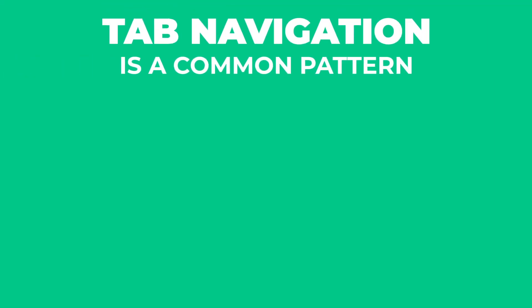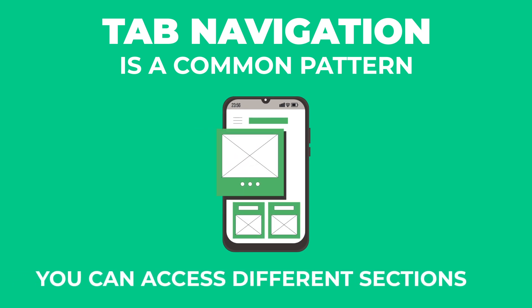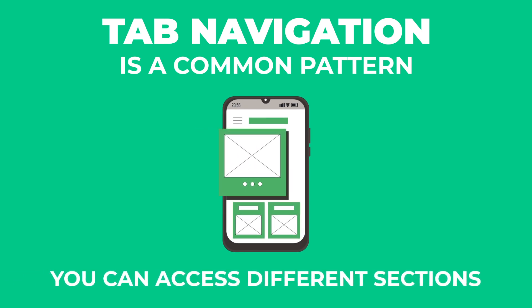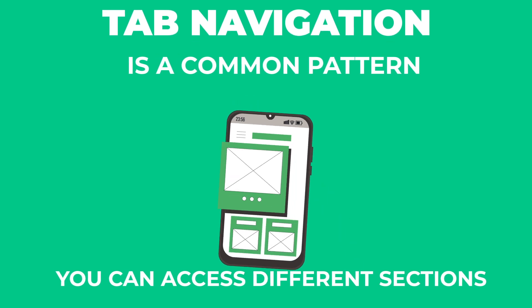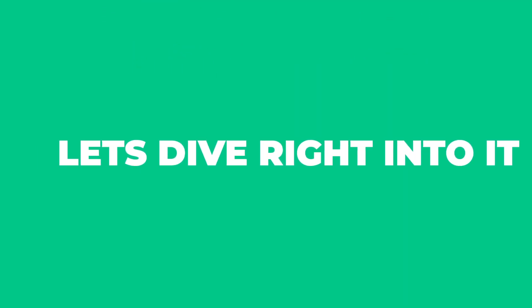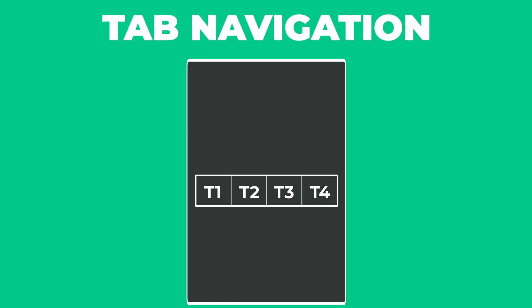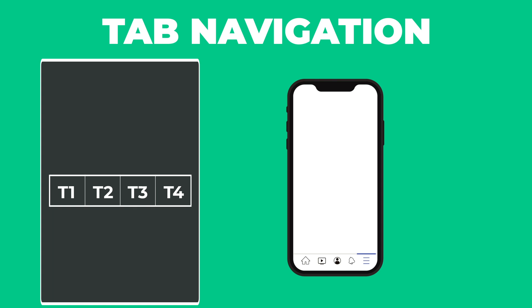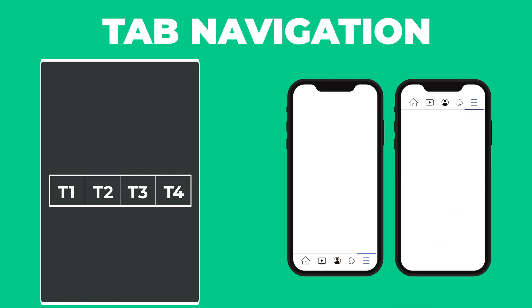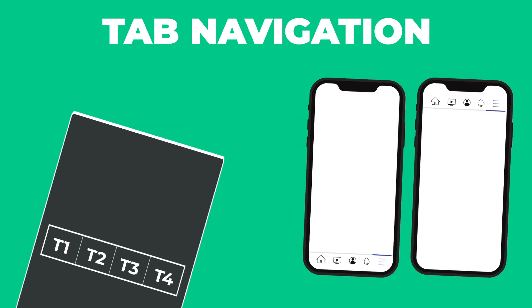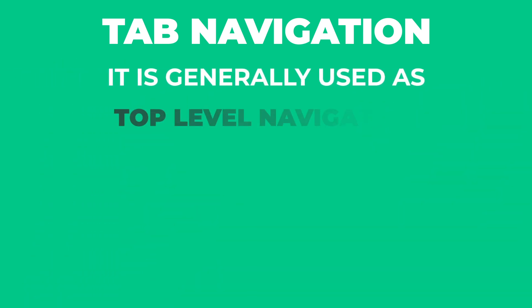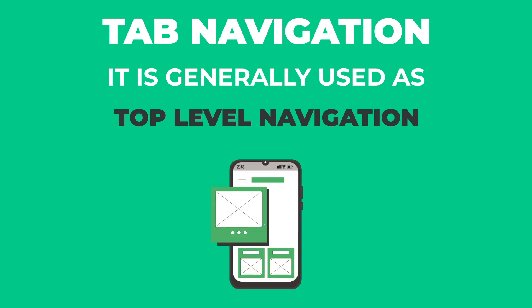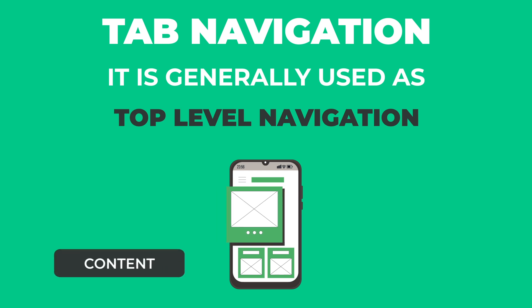Tab navigation is a common pattern in mobile apps, and you can access different sections of the app with just a single tab. You can divide your screen into different sections — showing a tab bar at the bottom or at the top of the screen. This is generally used for top-level navigation, especially for apps which have distinct categories of content or functionality.